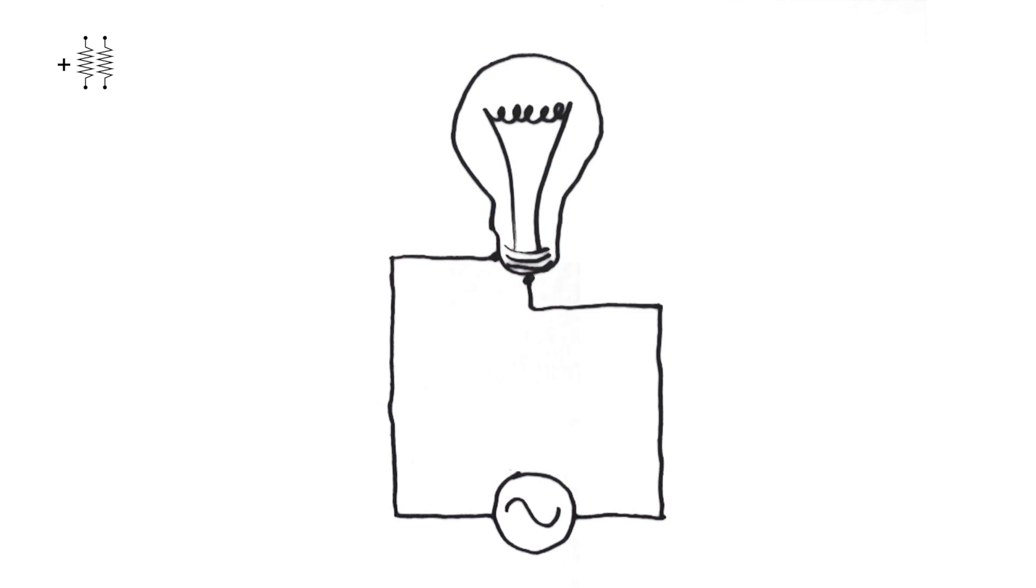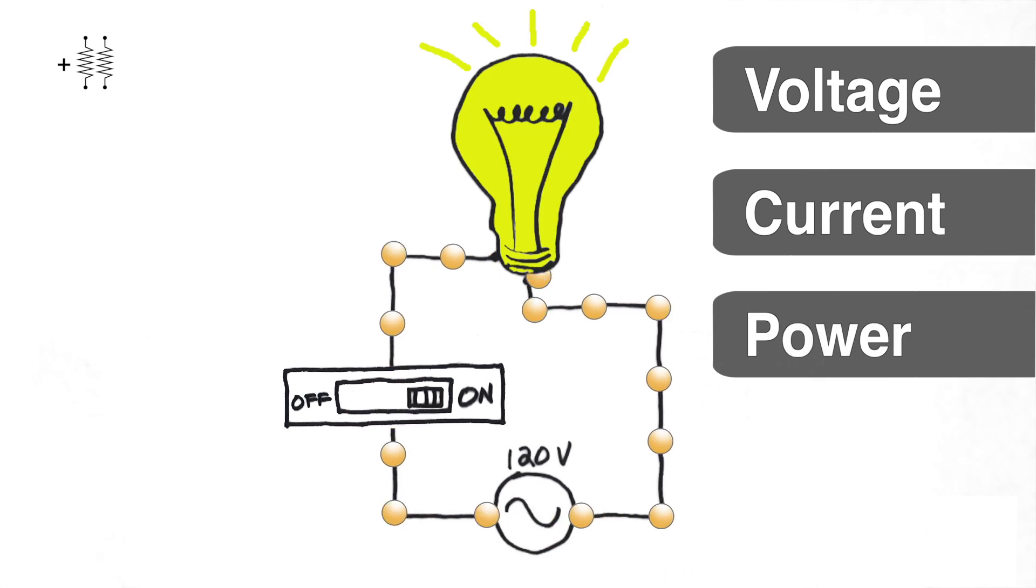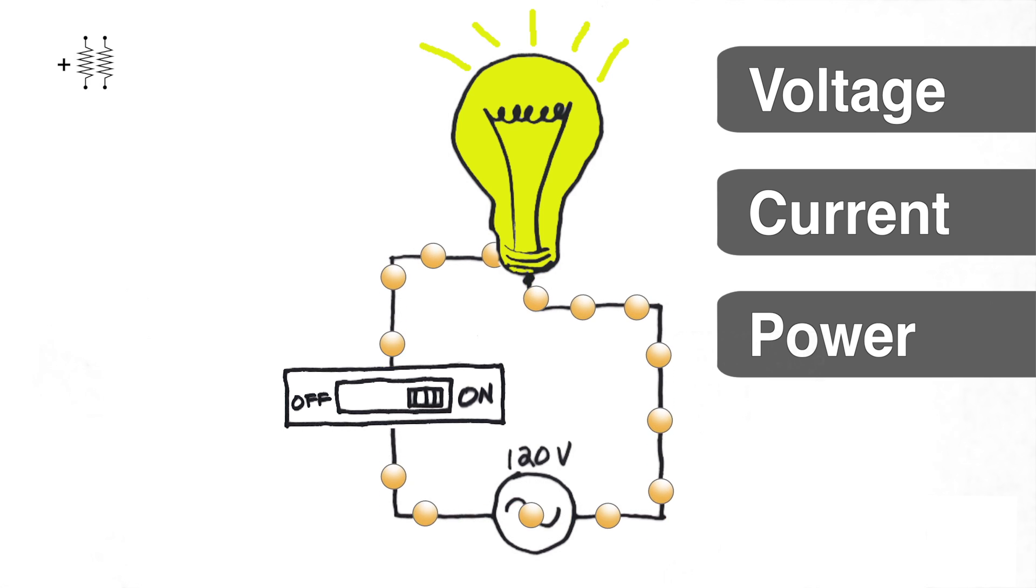Getting back to our light bulb circuit, remember that I said power is work. In the case of a light bulb, that work is going to be in the form of light, and a little bit of heat, depending on the type of light bulb. So, when 120 volts is applied, and current is allowed to flow, the work that gets done is actually in the form of light.